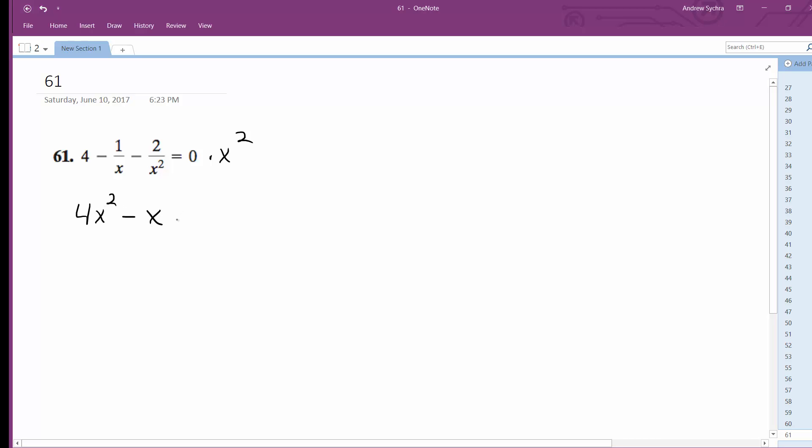And the quadratic formula is negative b plus or minus square root of b squared minus 4ac all over 2a.